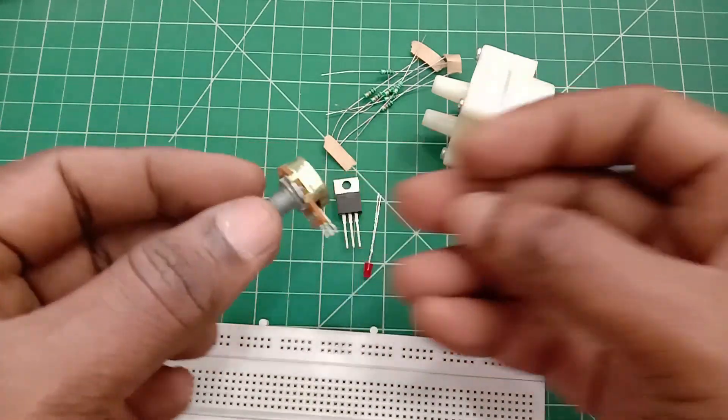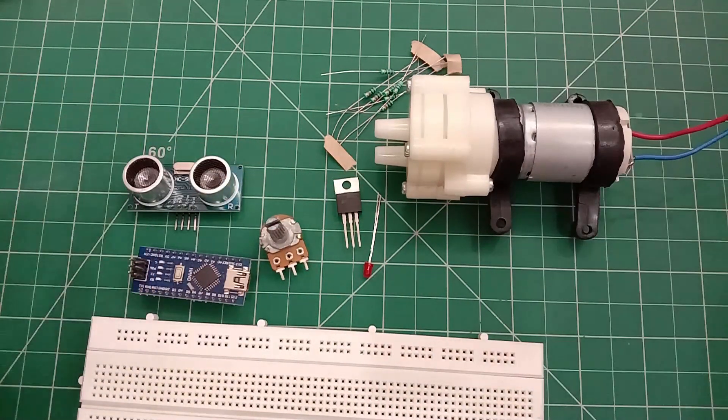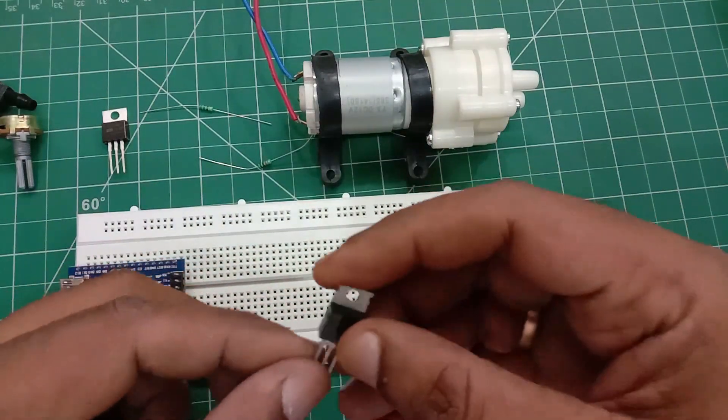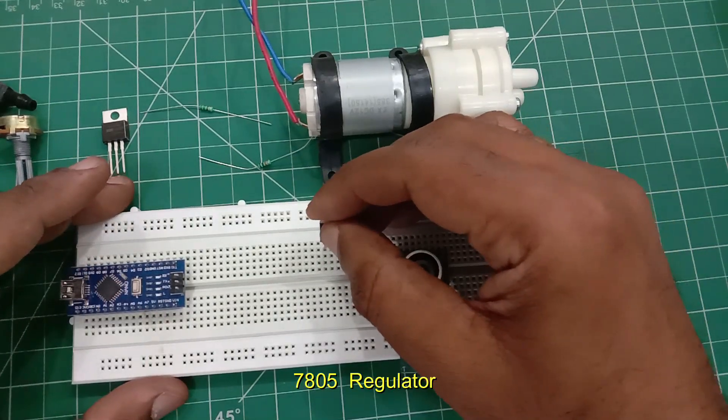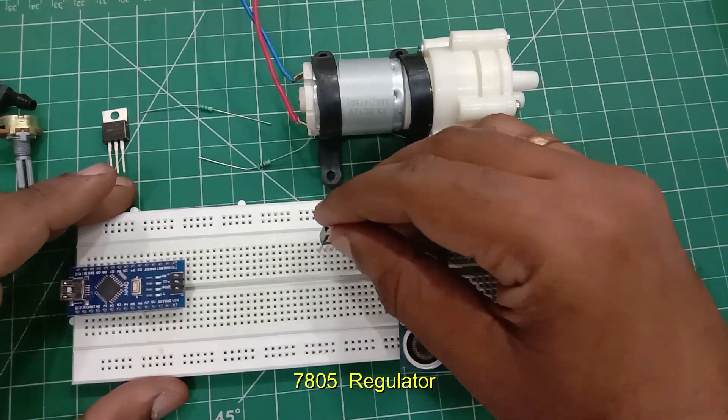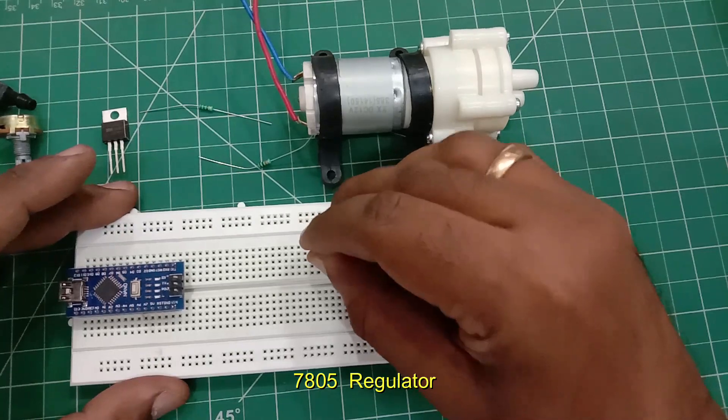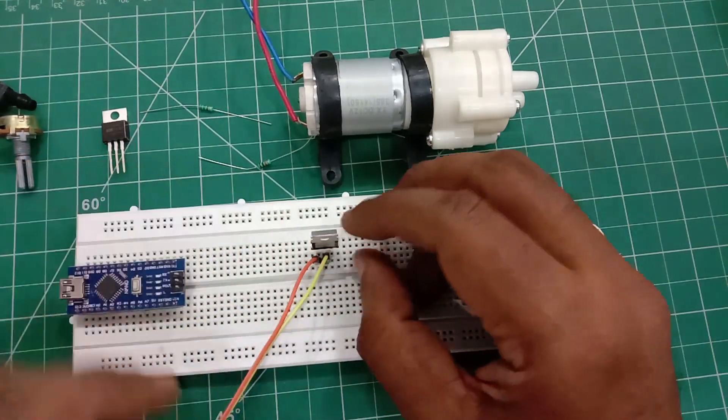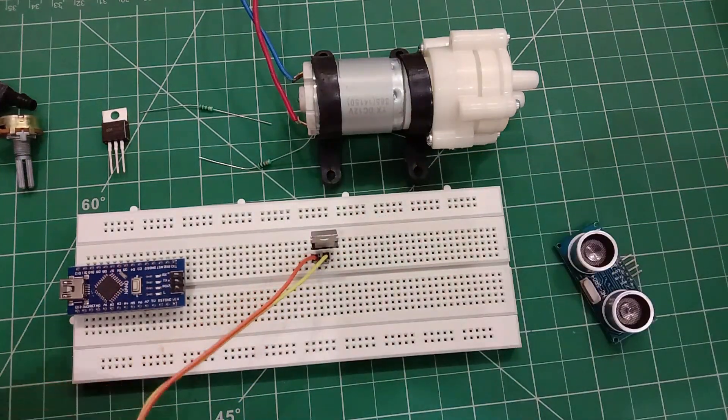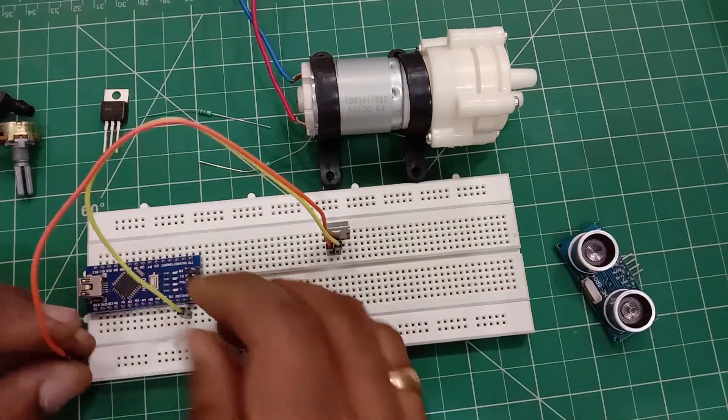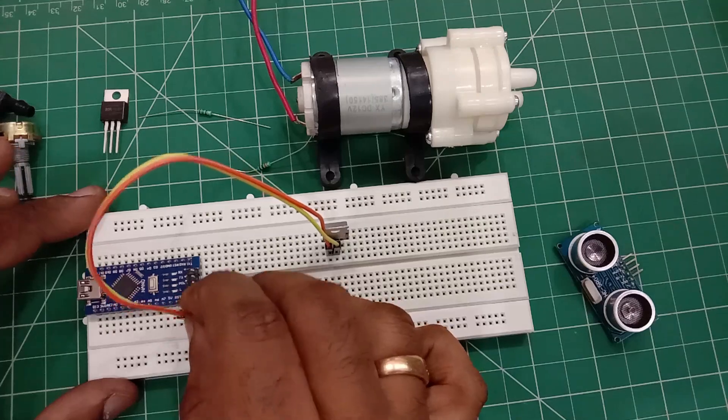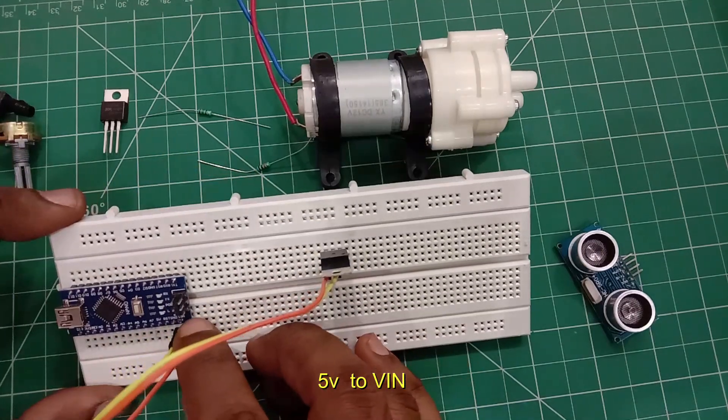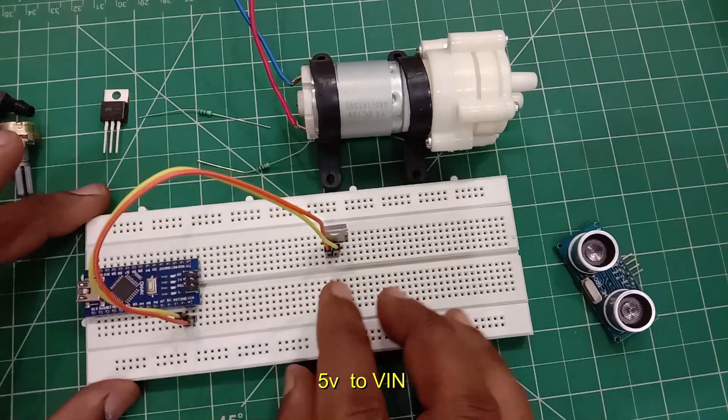For motor timing adjustment we require a 100k potentiometer. A 7805 regulator is required as pump works on 12 volt and Arduino Nano works on 5 volt. The third pin of the regulator goes to Vin of Arduino Nano, center pin goes to ground, the first pin of 7805 regulator is connected to 12 volt adapter.